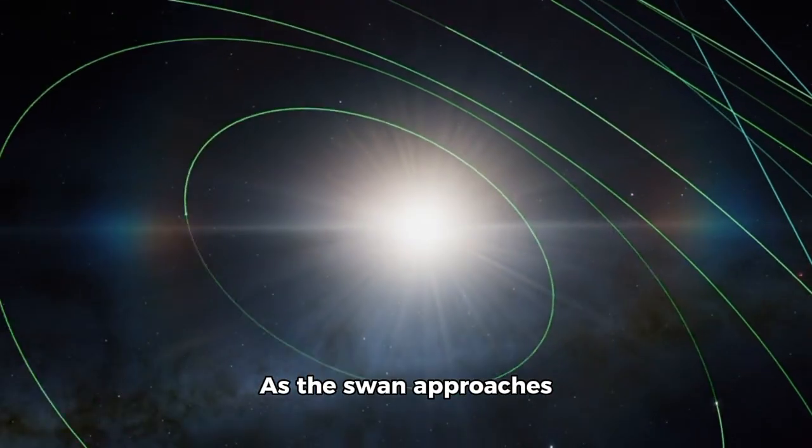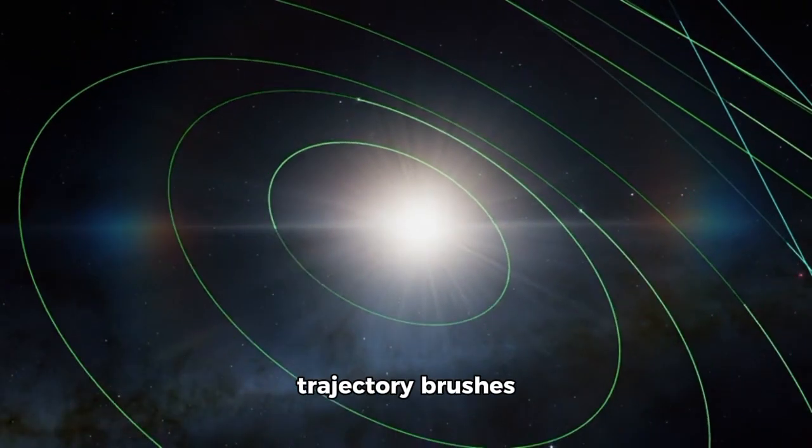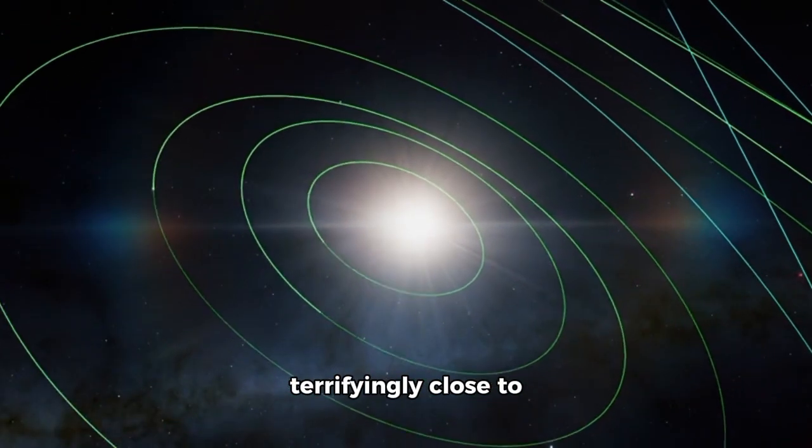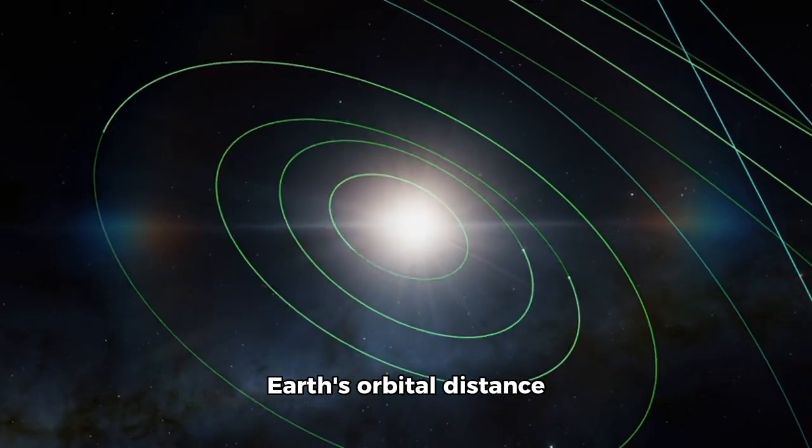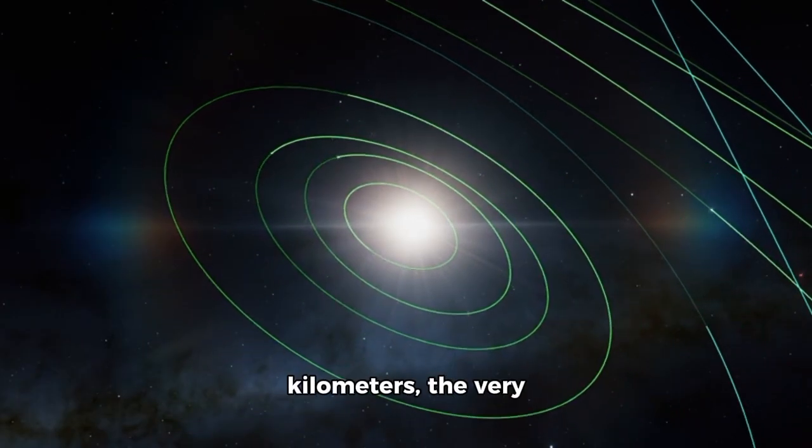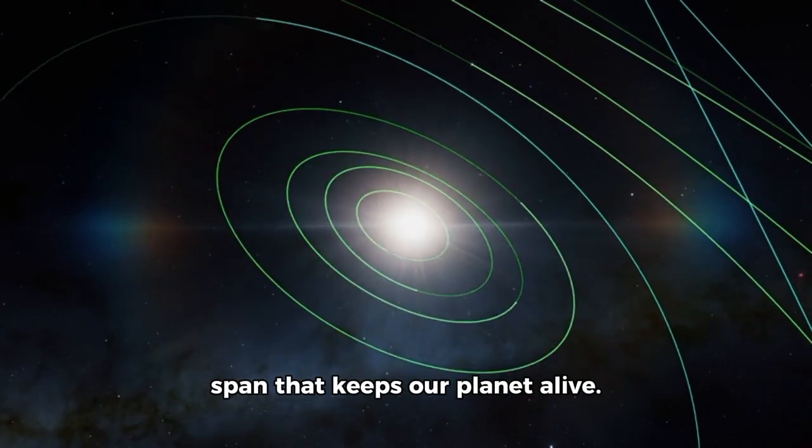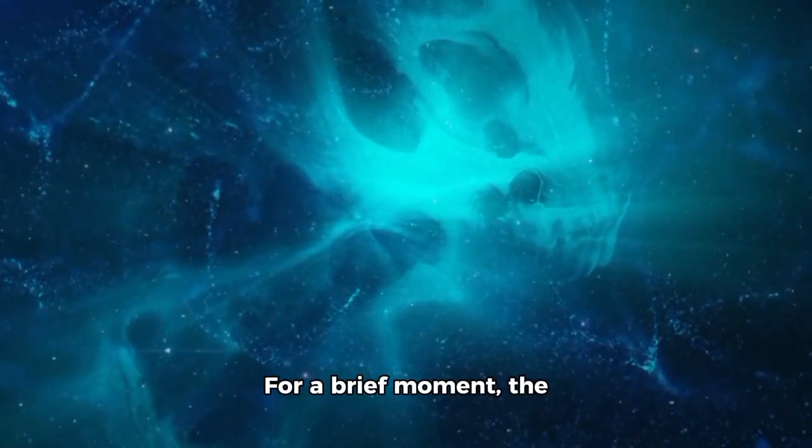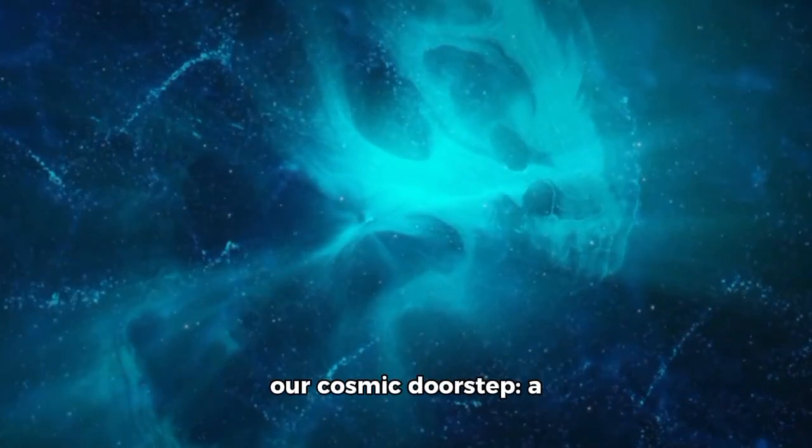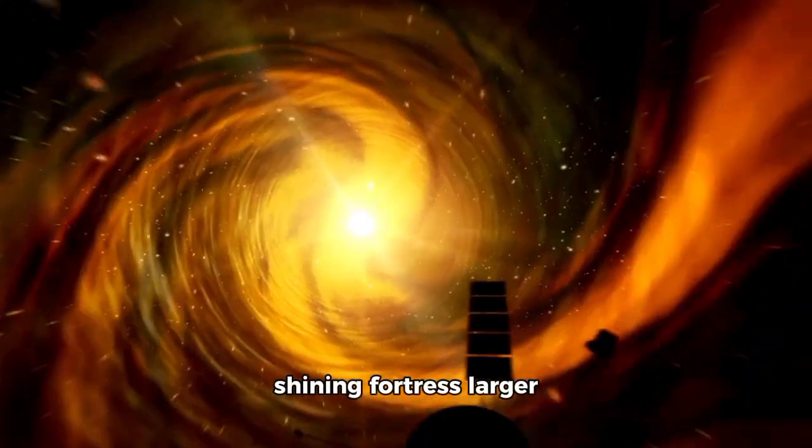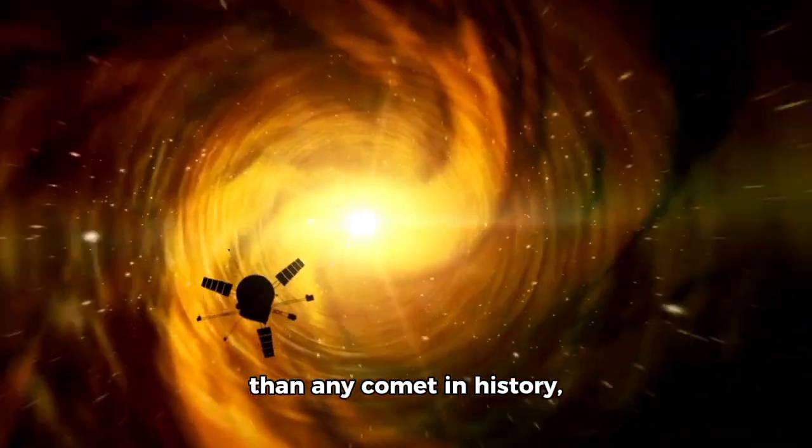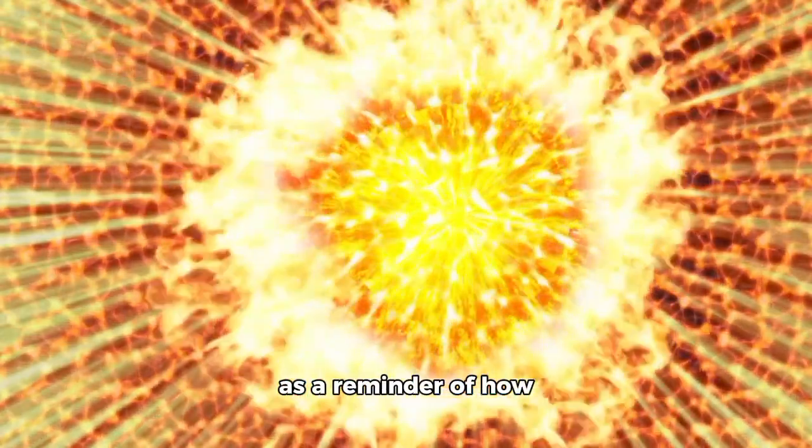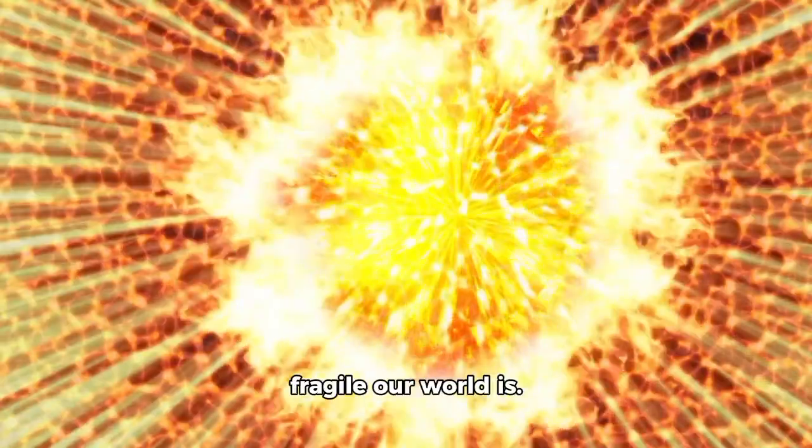As the SWAN approaches perihelion, its trajectory brushes terrifyingly close to Earth's orbital distance, 150 million kilometers, the very span that keeps our planet alive. For a brief moment, the SWAN will skim the edge of our cosmic doorstep, a shining fortress larger than any comet in history, passing as though to serve as a reminder of how fragile our world is.